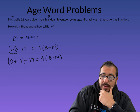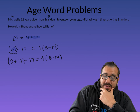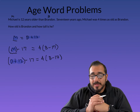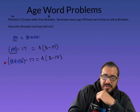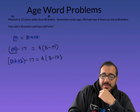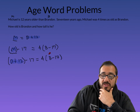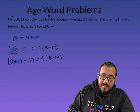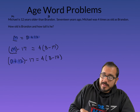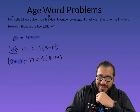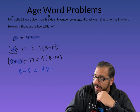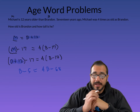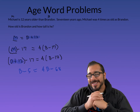On the left-hand side, we combine like terms: 12 and −17 give us −5, so we get B − 5. On the right-hand side, we distribute the 4: 4 times B is 4B, and 4 times −17 is −68. So we have B − 5 = 4B − 68. Let me just make sure that's a B and not a 13.